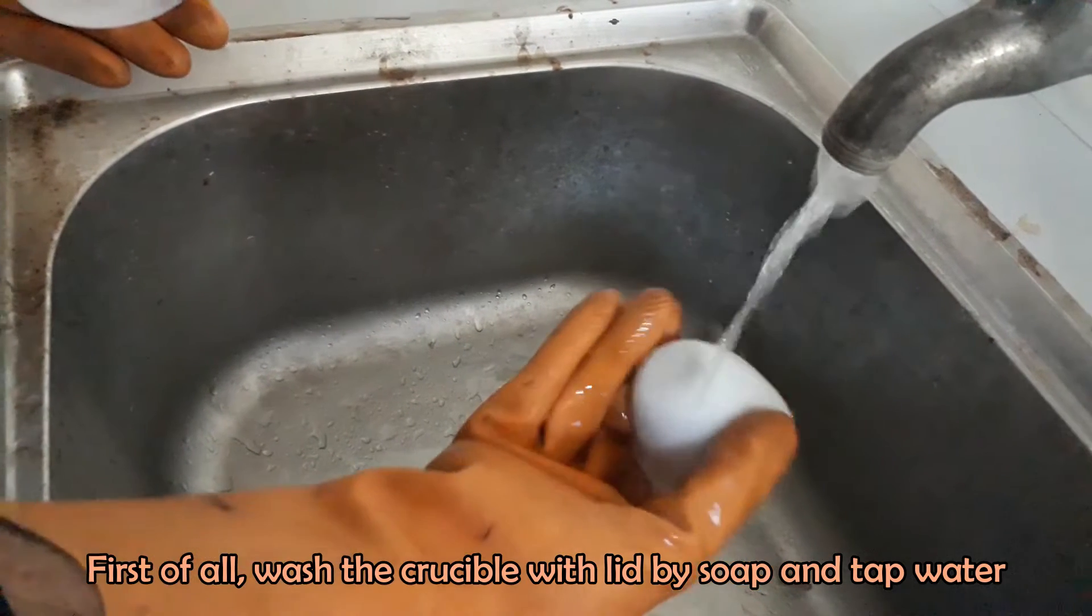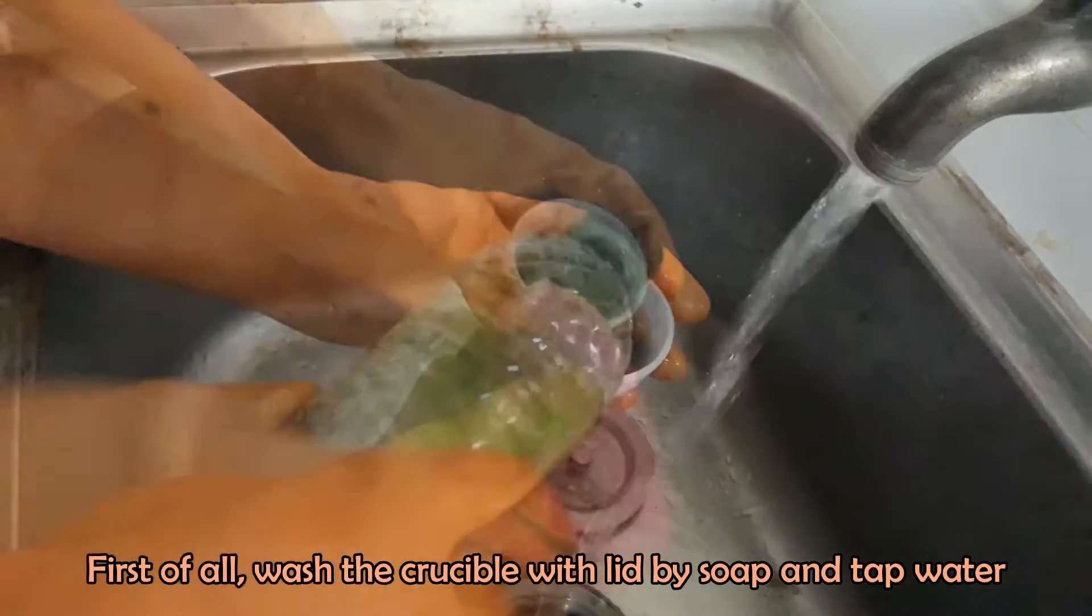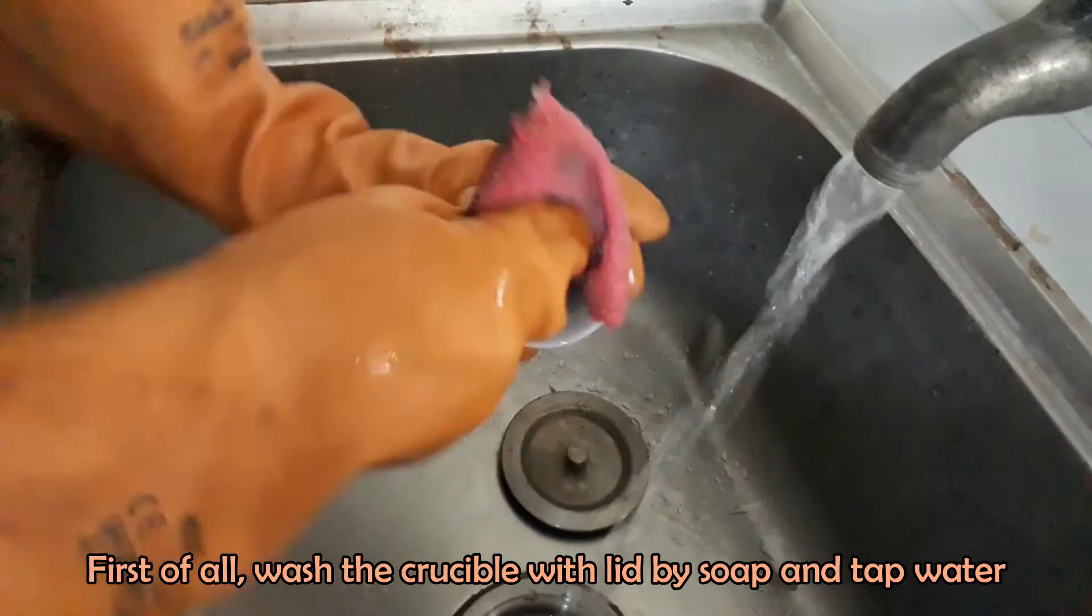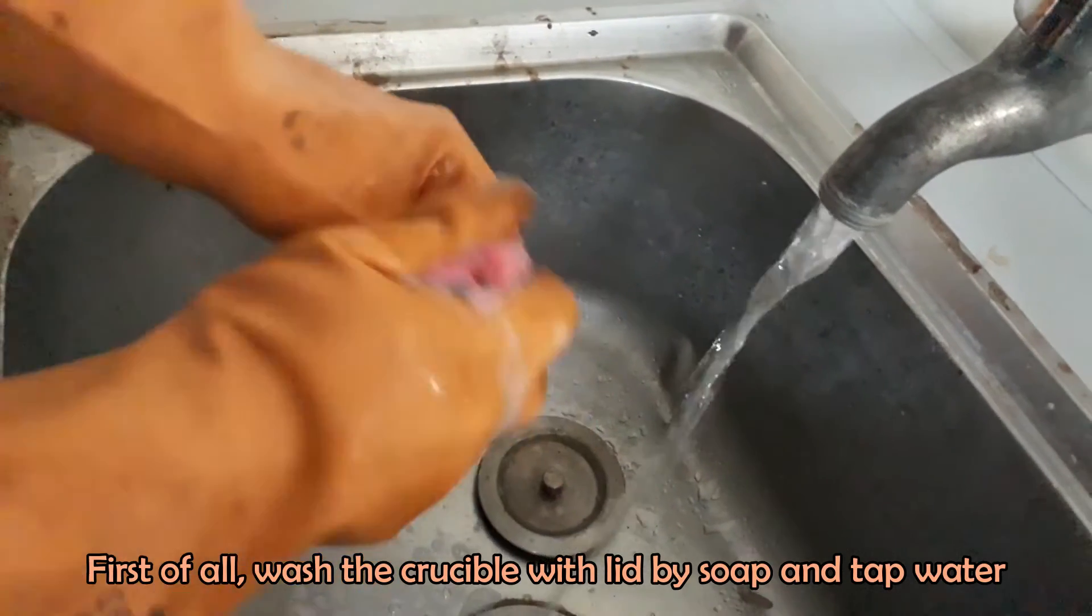First of all, we have to clean and dry porcelain crucible properly to avoid any sort of contamination. Wash crucible with soap, then nitric acid solution, and finally with deionized water.